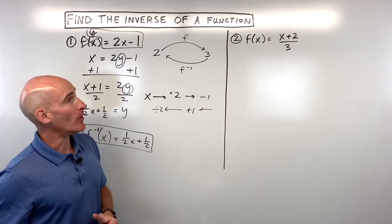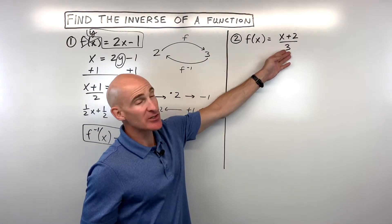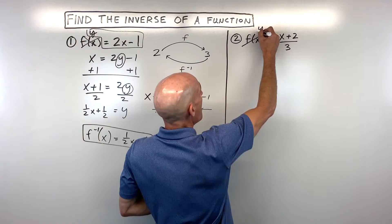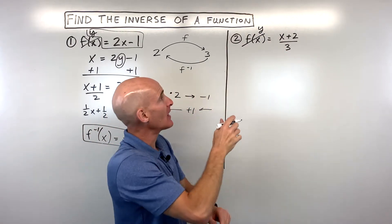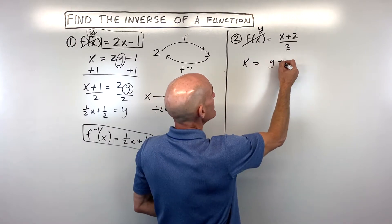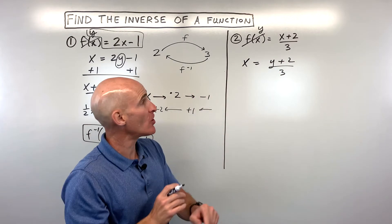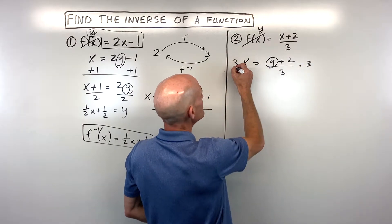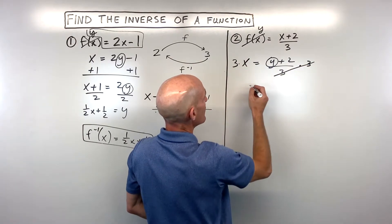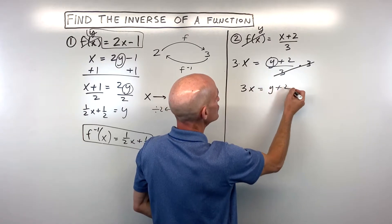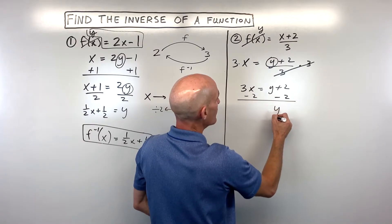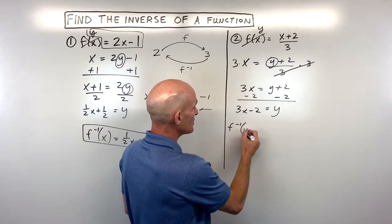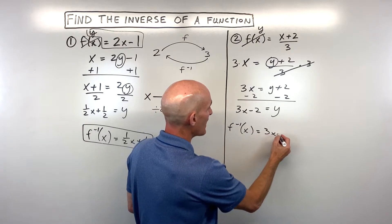For example 2, f of x equals (x plus 2) divided by 3. We think of f of x as y, interchange x and y, and solve for the new y. Multiply both sides by 3 to cancel the division: 3x equals y plus 2. Then subtract 2 from both sides: y equals 3x minus 2. In inverse notation, f⁻¹ of x equals 3x minus 2.